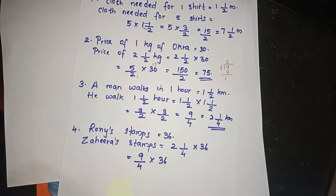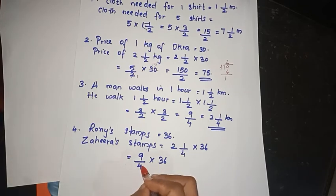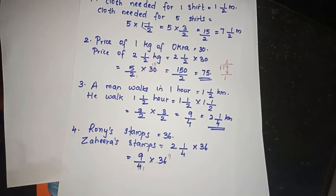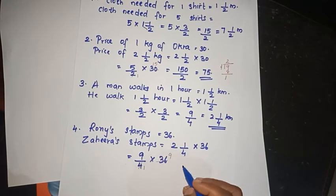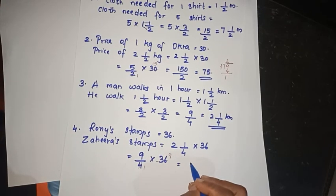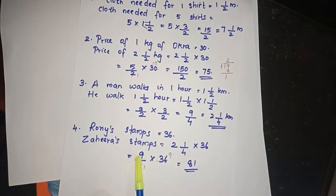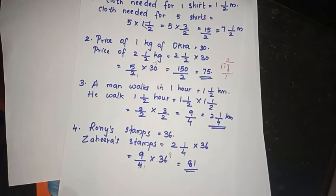4 into 36 — we divide: 36 divided by 4 is 9, then 9 into 9 is 81. So Sahira has 81 stamps.